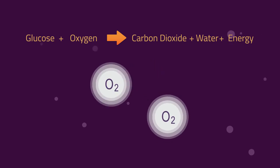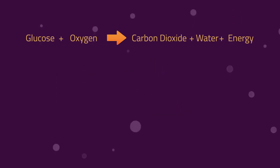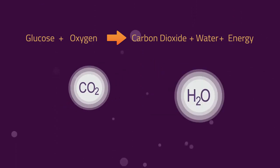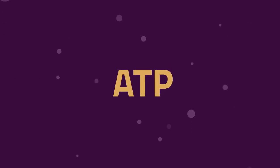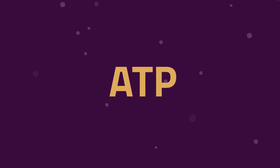Glucose is broken down by oxygen to release the byproducts of carbon dioxide and water. Energy is released, which is then used to make a special energy molecule called ATP. ATP is how energy is stored for later use by the body.